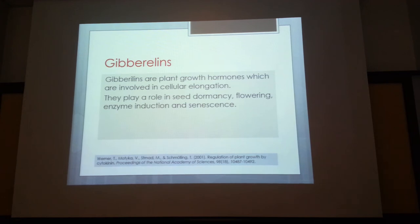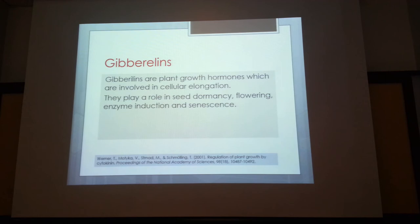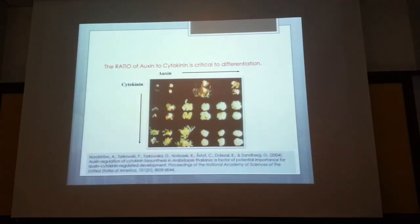Gibberellin was discovered in Japan when rice plants were found to collapse after harvesting due to a fungus called Gibberella fujikuroi. The fungus produces gibberellin, which causes cells to become turgid by absorbing a lot of water, causing the plant to collapse. This compound was isolated and identified as gibberellin. In tissue culture media, gibberellin is used at very low concentrations to enable propagation, as it induces cell turgor.